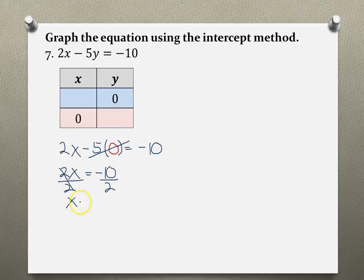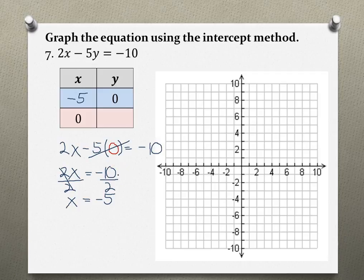x equals negative 5. So my x value is negative 5, and this would represent my x-intercept. We can check that on our coordinate system to plot that as a point. So negative 5 on the x-axis, this is x, this is y, and 0. So right over here.